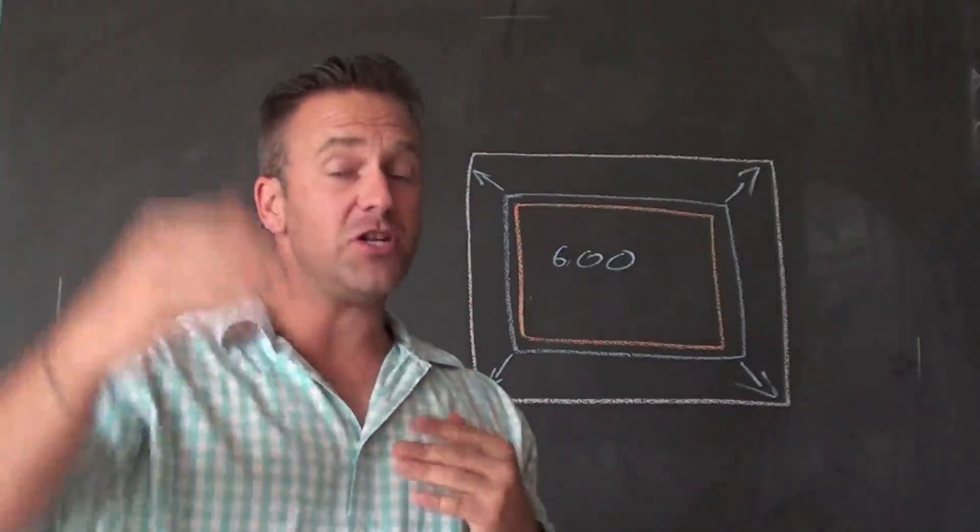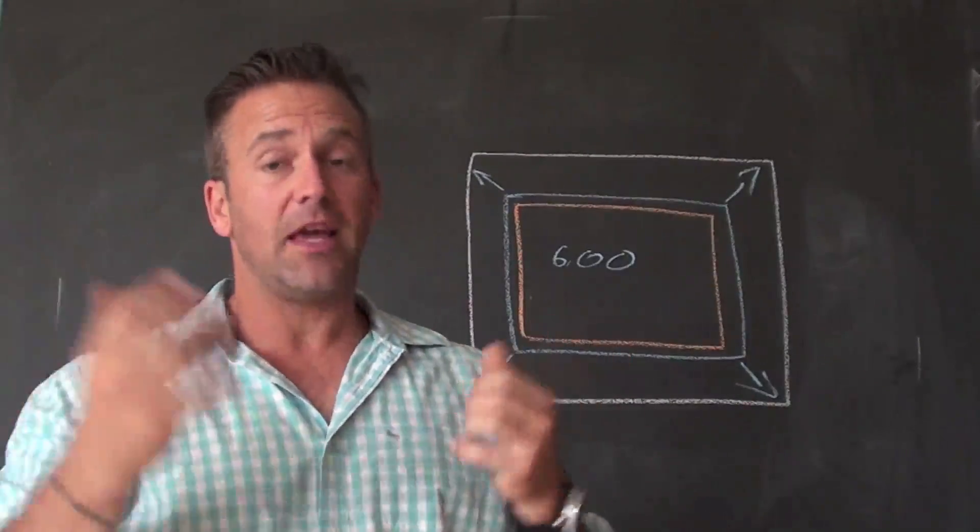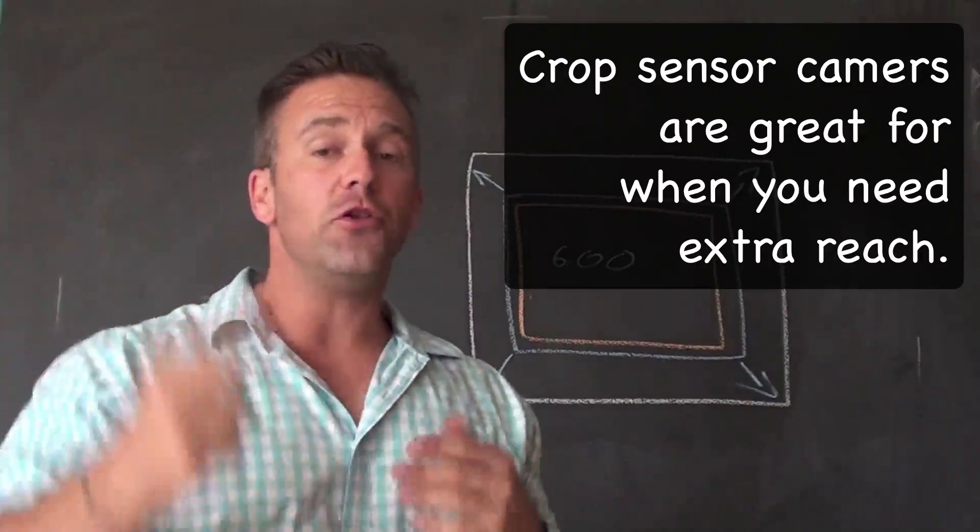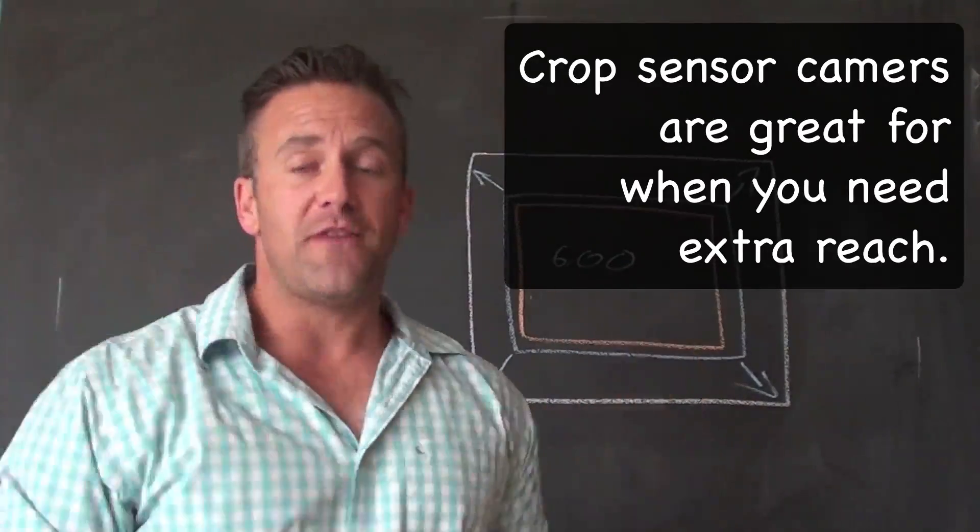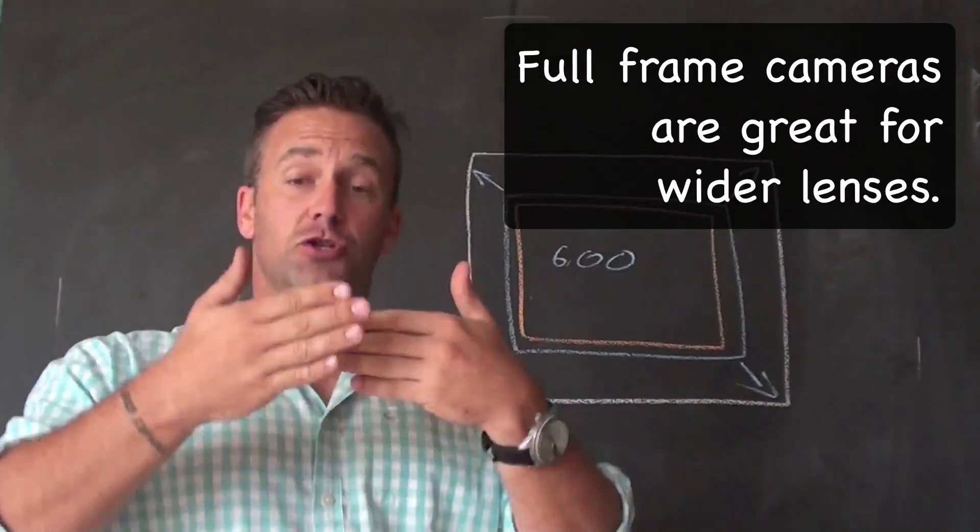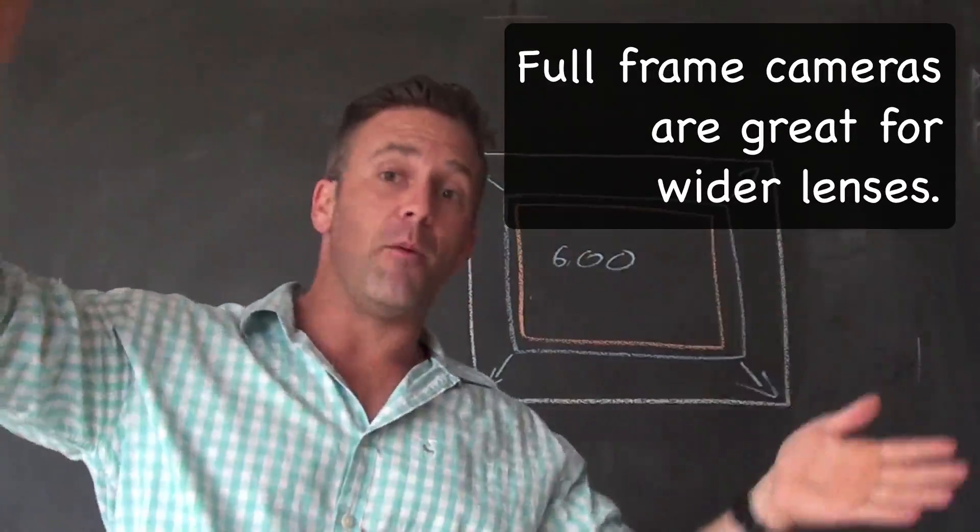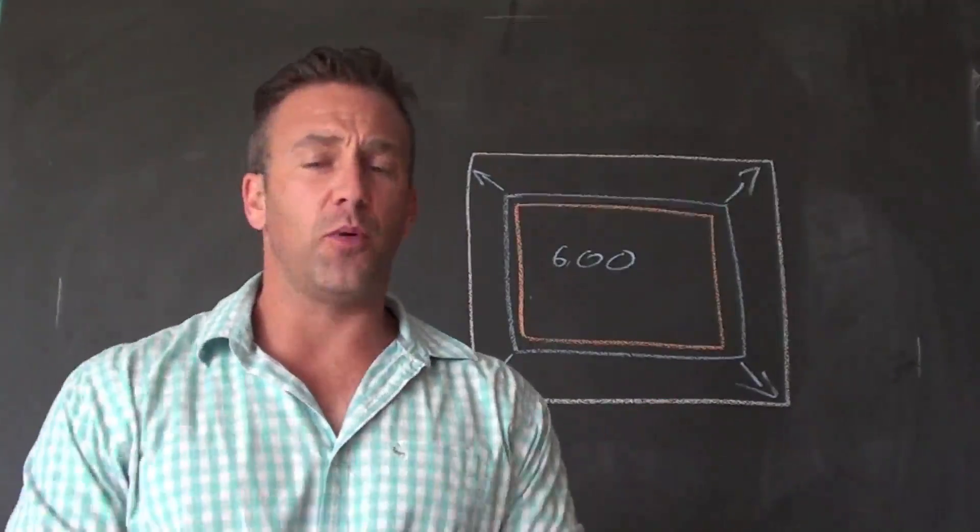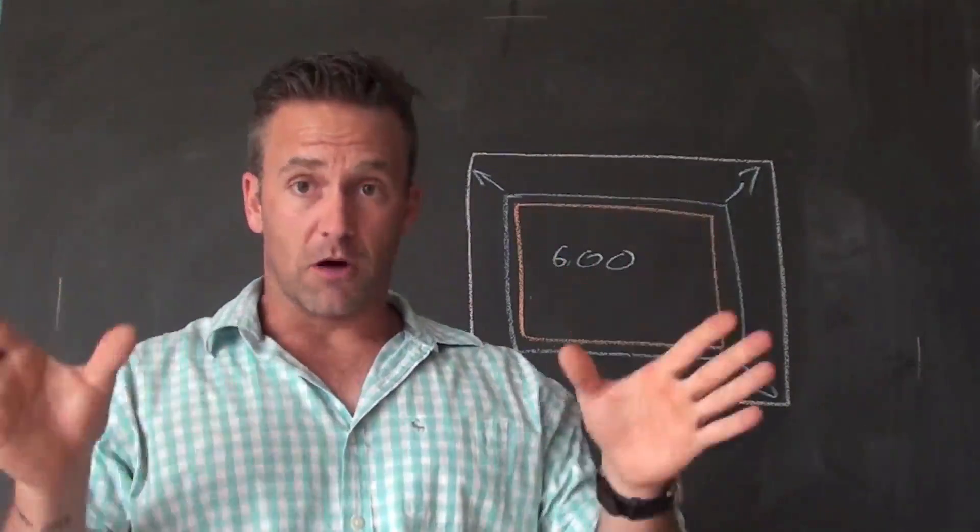Do I need that reach? Do I want that reach? Then get yourself a crop sensor and go for the reach. Get that extra additional crop zoom factor in. If you want the wide stuff and you have the money and the budget to rent or buy the big lenses, the 600, the 400 2.8, go wide. Go full frame.